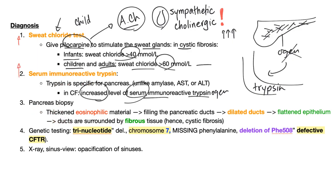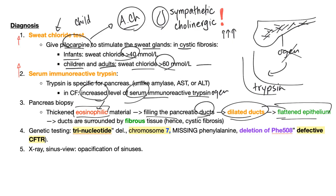You can do a pancreatic biopsy. You'll find thick, protein-like eosinophilic material filling the pancreatic duct — everything that's protein appears pink using H&E stain. The ducts are dilated and the epithelium is flattened due to distension with thick viscous secretions. The ducts are surrounded by fibrous tissue. That's why we call it cystic fibrosis — the pancreas is full of cysts and has fibrosis, not the lung.